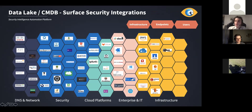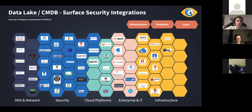In this slide you can see some of the integrations we have. We built modules to get data from these tools and have it inside the platform, and we correlate the data from one tool to another. Most of the tools are from security, but we also get data from Cisco, SolarWinds, AWS, and other vendors. There are many many other APIs that have been integrated already.